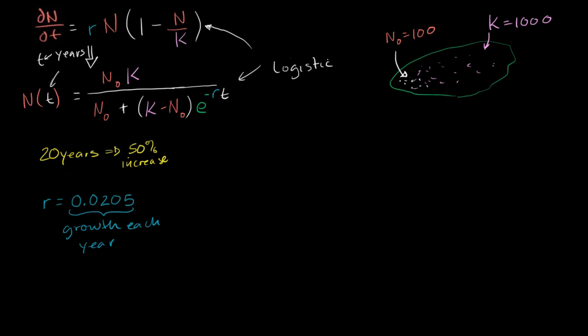So what would our logistic function look like given all of these assumptions? We would have n of t is equal to n naught times k, that's 100 times 1,000, divided by my initial population plus the difference between my final and initial. So 1,000 minus 100, that's 900, times e to the negative 0.0205 times t.